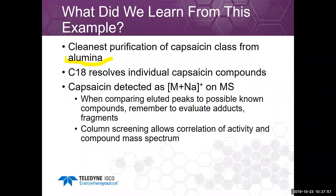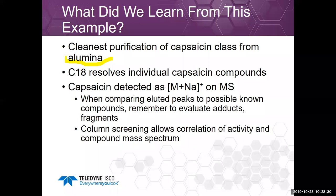Even though we have impurities that co-eluted on C18, this is still useful: the alumina gives the cleanest purification of capsaicin as a class, but C18 resolves the individual compounds. We also learned that capsaicin is detected as an M+Na peak. When looking at mass spectra and comparing against known compounds, remember to evaluate adducts such as solvent adducts — under ESI conditions you may see M+H+methanol, M+H+acetonitrile, or M+sodium or M+potassium as charge carriers. Also evaluate fragments — for instance, if you have an alcohol, you might see loss of water (M+H minus water).